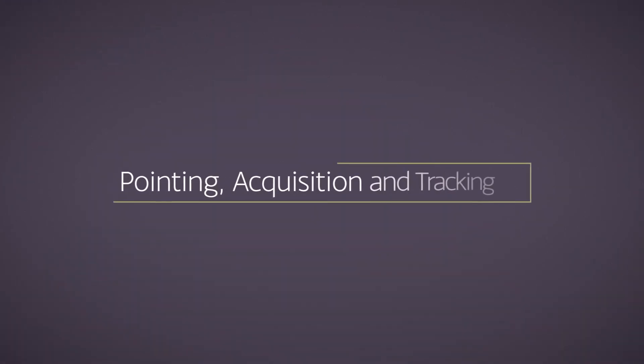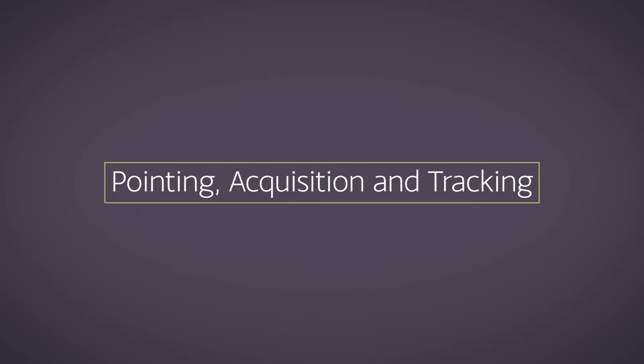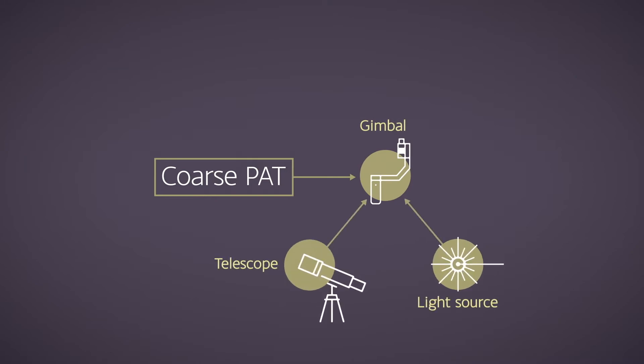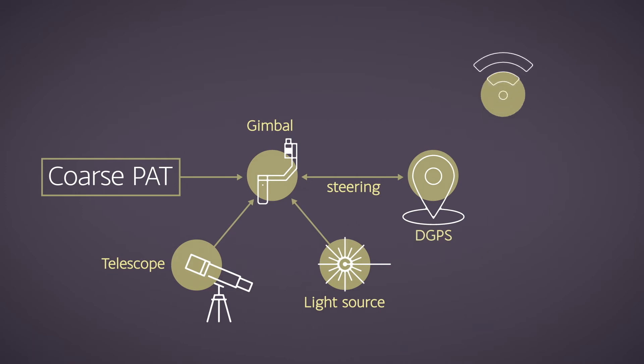We're now going to look at how unique link length range for haps can allow for a diverged beam to simplify a problem. The coarse Pointing Acquisition and Tracking, or PAT, subsystem includes a gimbal with the light source and telescope mounted on it. The gimbal is able to steer according to coordinates of two sites obtained from a differential GPS system.